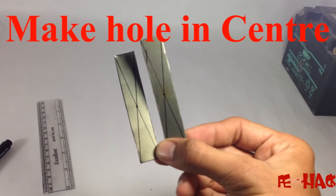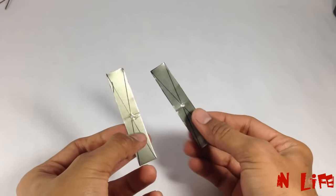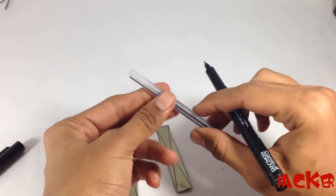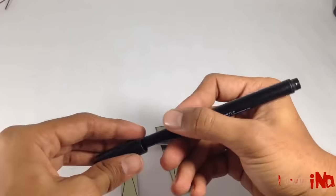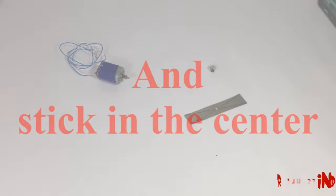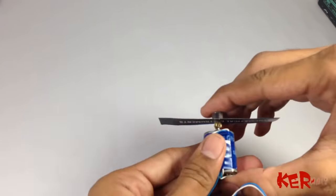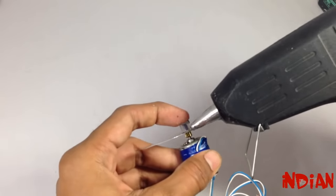Now make a hole in the center to fix on the shaft. I am using a use-and-throw pen to fix our wings on the shaft better. Now stick them to the shaft with strong glue. I am using a glue gun here.